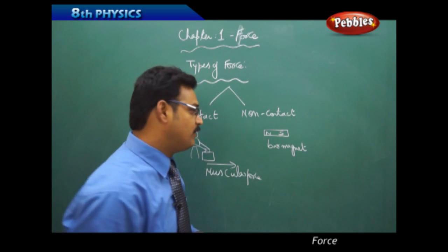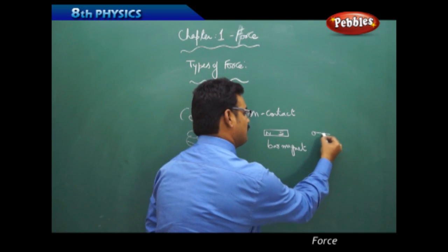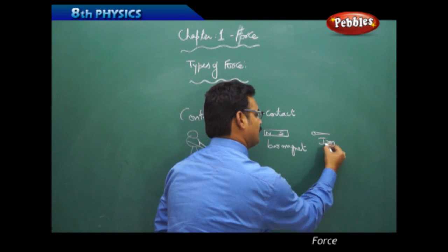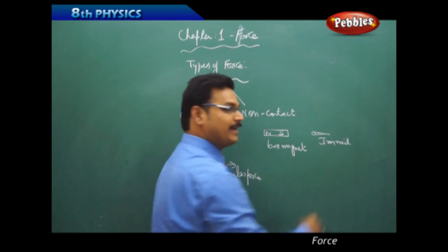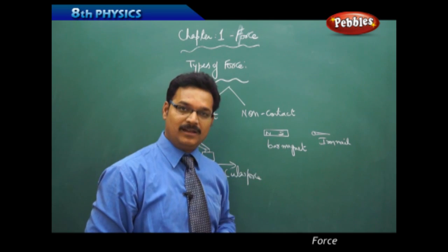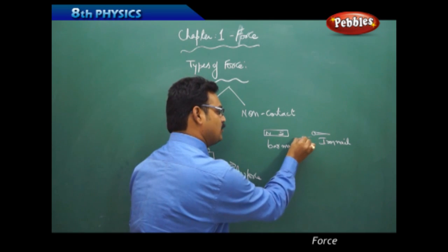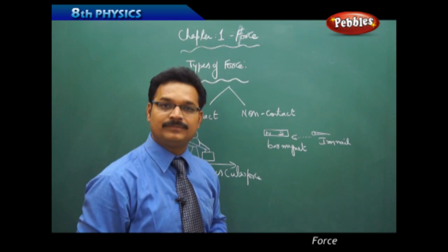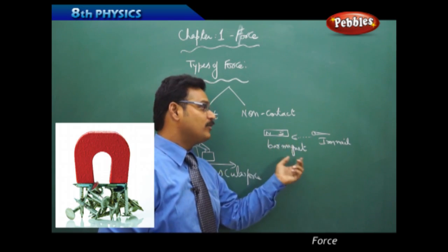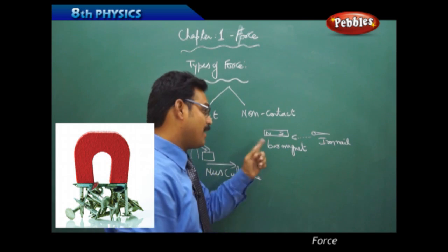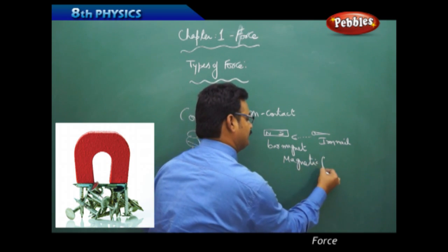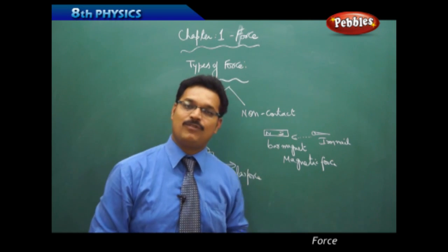Now if you keep any iron material like iron nail, when you kept it near the bar magnet, what happens? Even the bar magnet is not touching the iron nail, the iron nail is attracted towards the bar magnet. So without being in contact, still it is able to attract the iron nail. So magnetic force here is non-contact force.